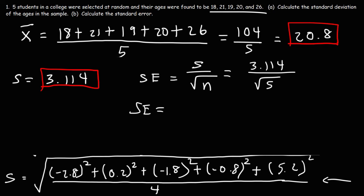So we're going to divide it by the square root of 5. So this is going to be 3.114 divided by the square root of 5, and that comes out to be 1.393. So that is the standard error in this example. That's how we can calculate it in this problem.